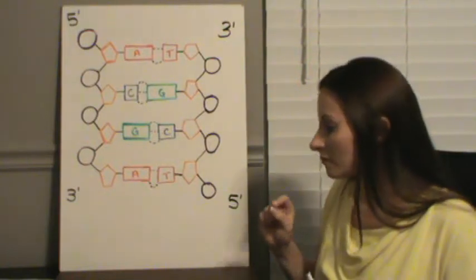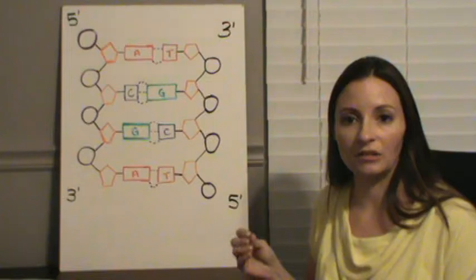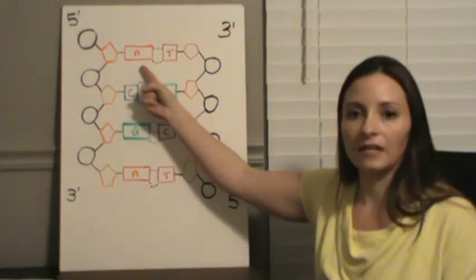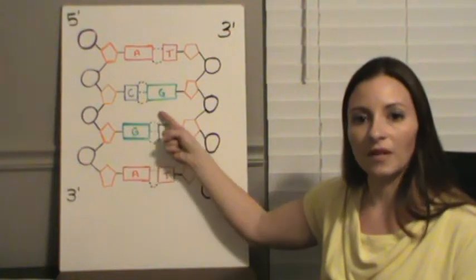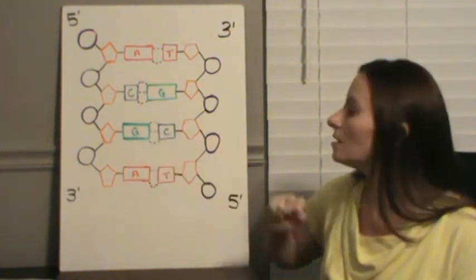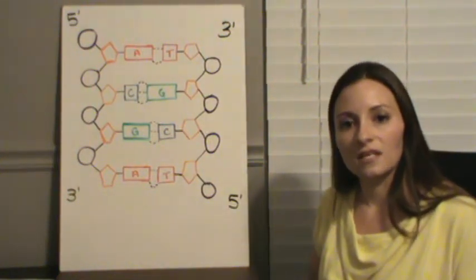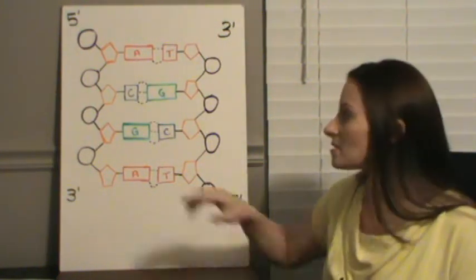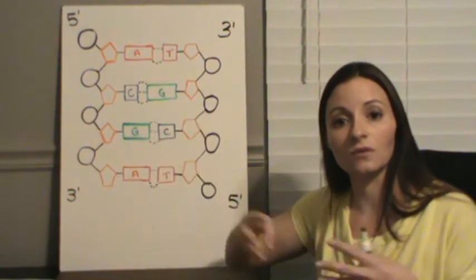So, one of the things with DNA is that they have what are called base pairing rules. With base pairing, adenine will only pair with thymine, and cytosine will only pair with guanine. This is due to the number of bonds that each one is going to make. Cytosine and guanine are going to make three bonds, so because they're going to make three bonds, they will only pair with each other.